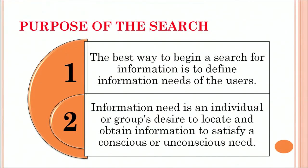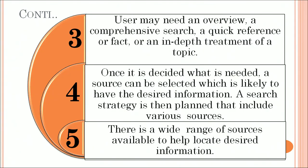The purpose of the search: the best way to begin a search for information is to define the information needs of the users. The information need is an individual or a group's desire to locate and obtain information to satisfy a conscious or unconscious need. A user may need an overview, a comprehensive search, a quick reference, or in-depth treatment of a topic. Once it is decided what is needed, a source can be selected which is likely to have the desired information. A search strategy is then planned which includes various sources available to locate the desired information.